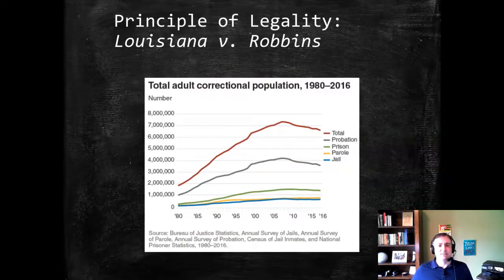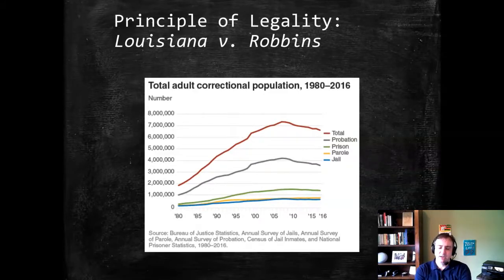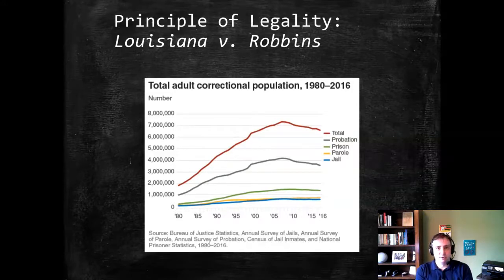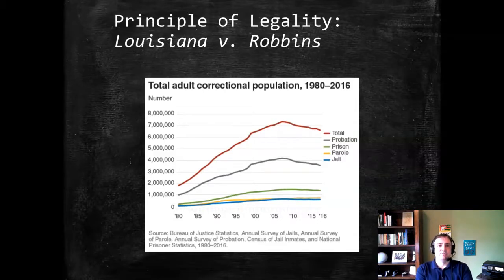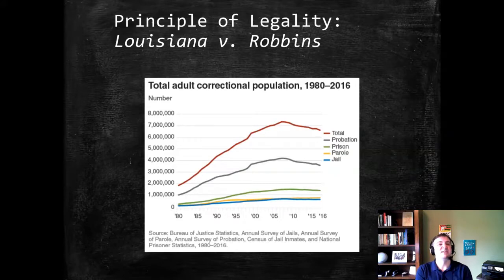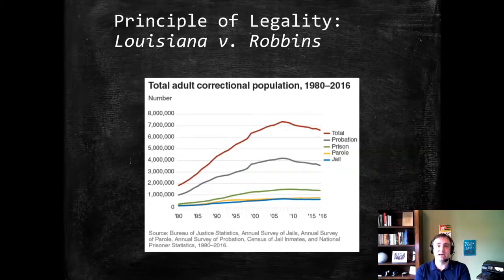The basic concepts of the principle of legality — at least the American version of it, which might be slightly different than the English or versions in other nations — is that crimes must be defined by the legislature before the criminal acts for which a person is charged are committed. Similarly, any punishment for those acts should be defined before the crime is committed. This gives the concept of notice, or at least constructive notice, even if there's not actual notice. If we allow retroactive application of crimes or if we allow judges to make it up on an ad hoc basis and apply it retroactively, there's a lot of dangers.